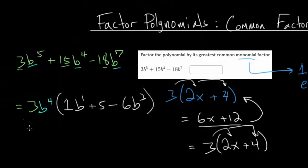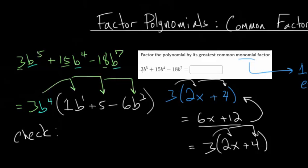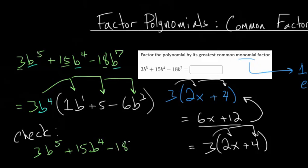Once you think you have an answer, you want to check it by redistributing. Take 3b⁴ and multiply it into all three terms. 3b⁴ times b is b⁵. 3b⁴ times 5 is 15b⁴. And 3b⁴ times -6b³: 3 times -6 is -18, and b⁴ times b³ gives b⁷. So we get 3b⁵ + 15b⁴ - 18b⁷, which is exactly what we started with. We can feel confident this is the correct answer.